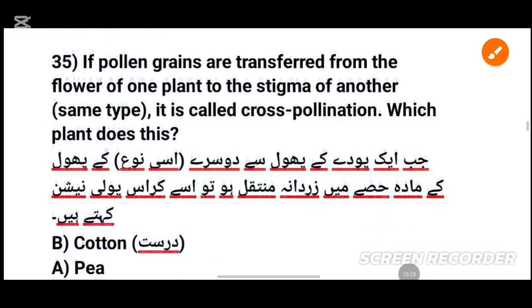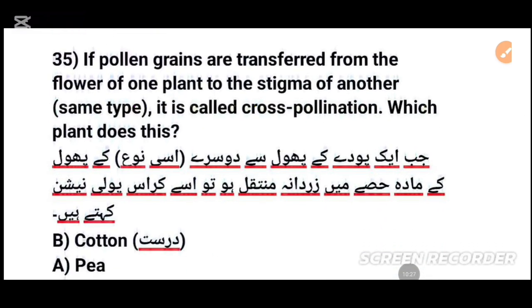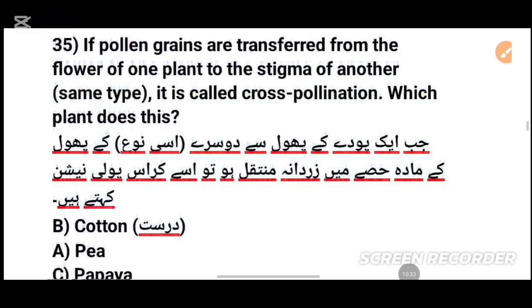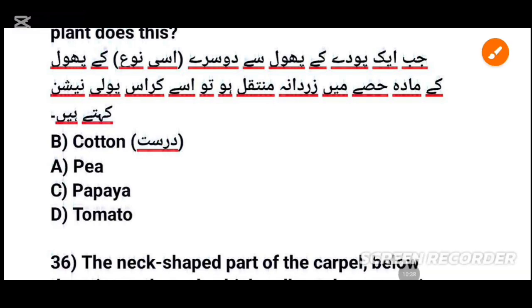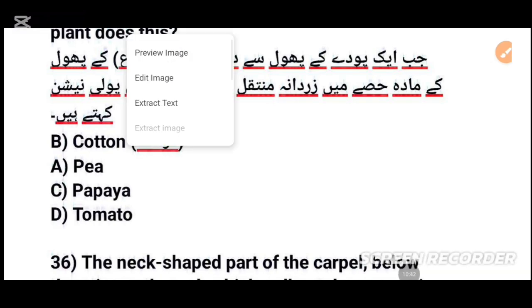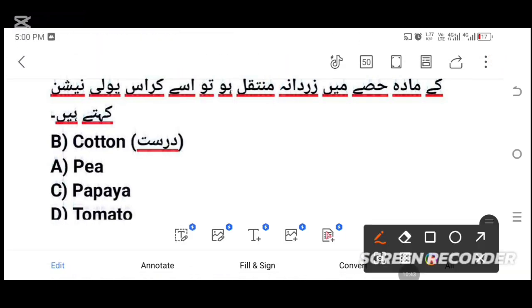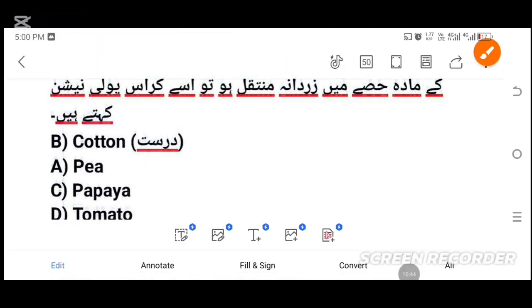MCQs number 35: If pollen grains are transferred from the flower of one plant to the stigma of another plant of the same type, this is called cross-pollination. Which plant does this? The answer: cotton plant — tick the correct option.